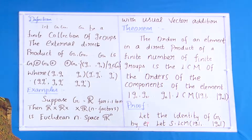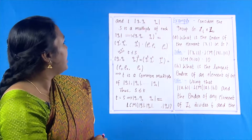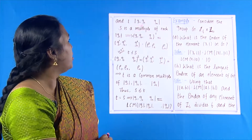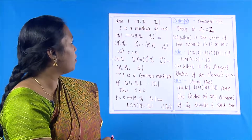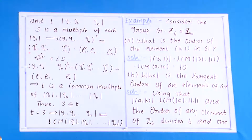Let s denote the LCM of the orders of g₁, g₂, …, gₙ, and let t denote the order of (g₁, g₂, …, gₙ). Since s is a multiple of each order of gᵢ, this implies that (g₁, g₂, …, gₙ)^s = (g₁^s, g₂^s, …, gₙ^s) = (e₁, e₂, …, eₙ). So t is less than or equal to s.